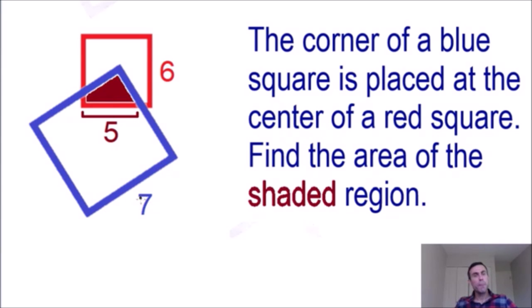And what we know is that the blue square has a side length of 7. We know that the red square has a side length of 6. And we know that this segment at the bottom of the red square has a side length of 5. So using all this information we need to find the area of the shaded region in dark red. So take your time to work on this problem and I will show you the solution in 5 seconds.